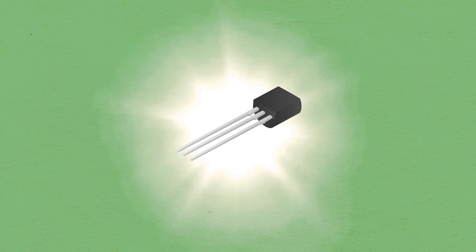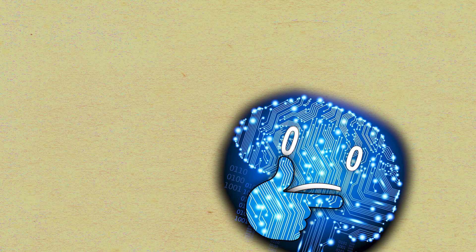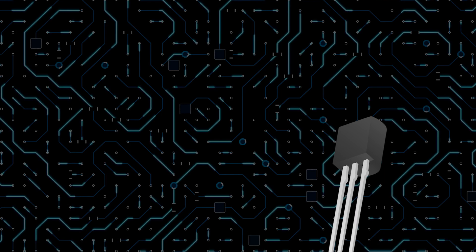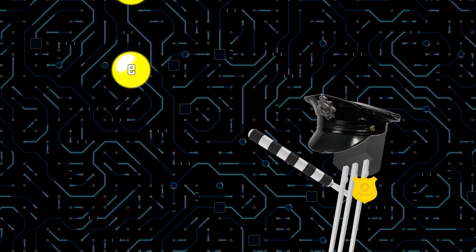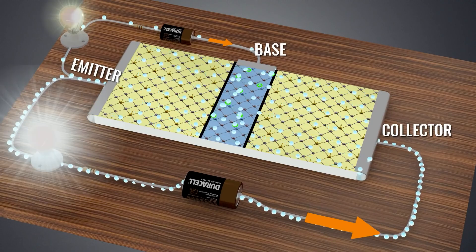Transistors are the unsung heroes of the digital age, quietly working behind the scenes to make our technology-driven world possible. But what exactly is a transistor? It can be described as a tiny device that acts like a traffic policeman for electrons, controlling and amplifying the flow of electricity with incredible precision and speed.